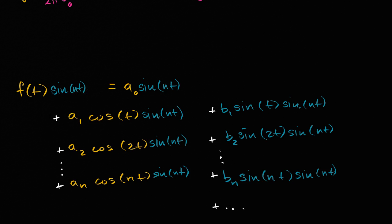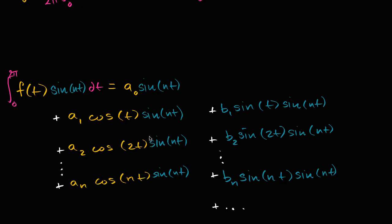We take the definite integral from zero to two pi. I'm picking that interval because two pi is the period of the periodic function we care about, and everything else I've been doing has been over that interval of two pi. We know that the integral of a sum of things is the same as the sum of the integrals, and we can take constant multipliers outside of integrals.